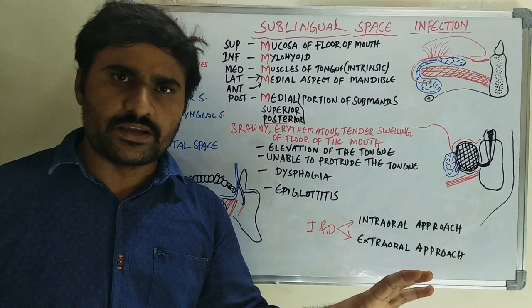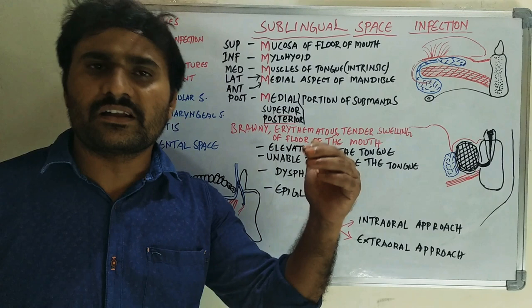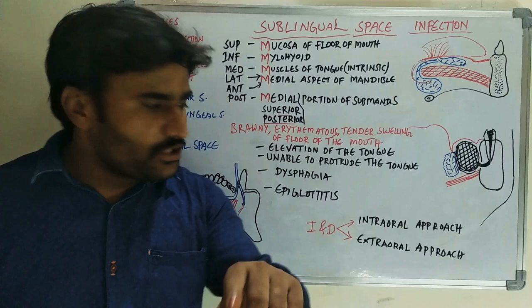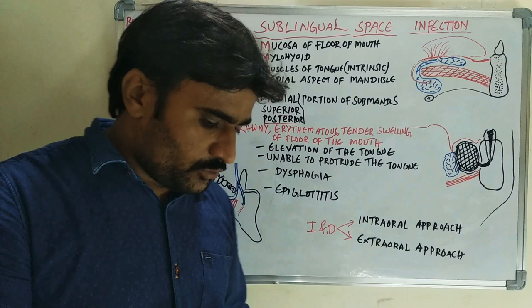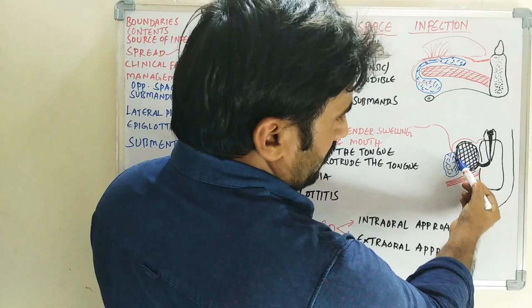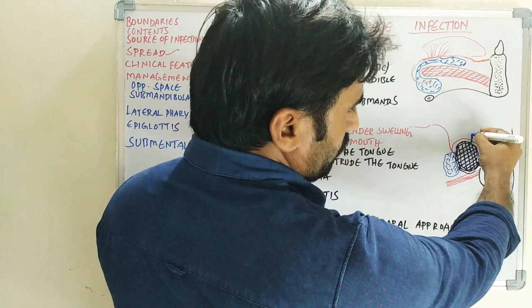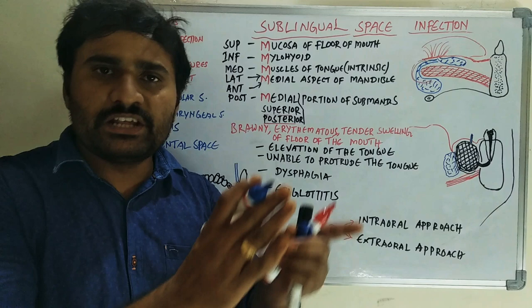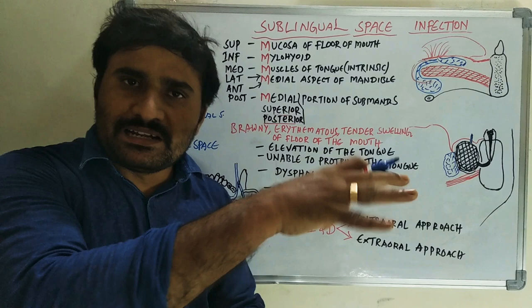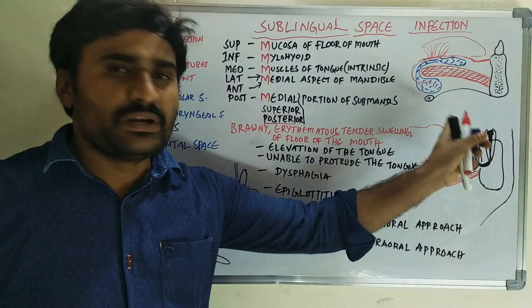Management includes antibiotics and analgesics routinely. If the patient is toxic, hydration therapy and other supportive therapies are given. When there is a well-localized abscess, incision and drainage is performed via intraoral or extraoral approach. Intraorally, an incision is placed close to the alveolar border in the mucosa of the floor of the mouth, parallel to Wharton's duct, to avoid injury to the sublingual gland and duct. Blunt dissection is then performed to drain the pus.